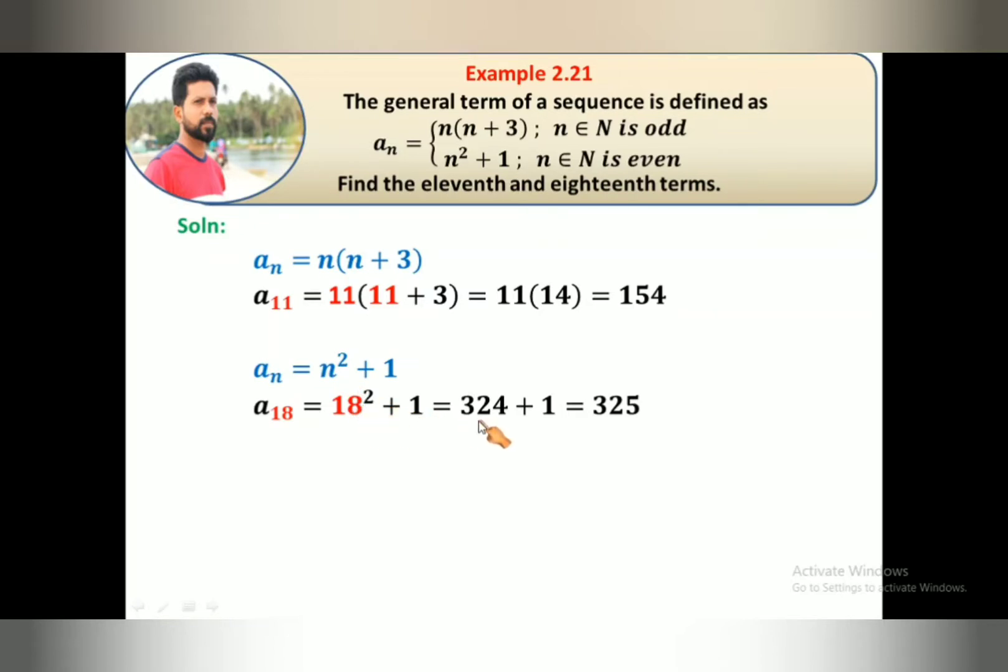The total is equal to 325. So the 18th term is equal to 325. Now we have the 11th term and 18th term. Okay? Thank you students, we'll see you next time.